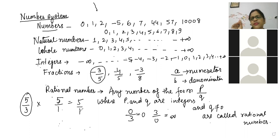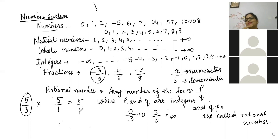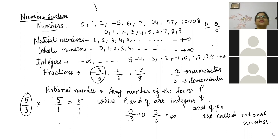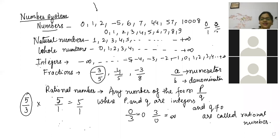Tell me one rational number which is an integer also. Darshini, Vishal, Abhinash — six by three, that is two. Ashwin and Kanishka say zero. Numbers like zero by one, zero by four, or four by two — all these are exactly fractions and they are integers also. Awesome!